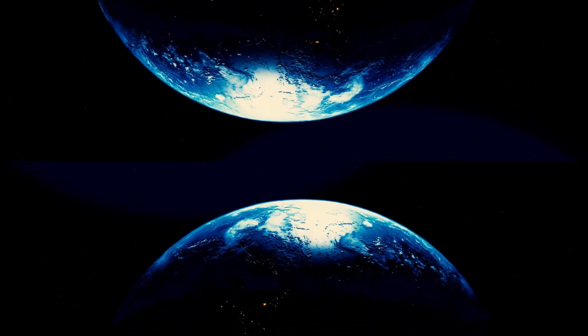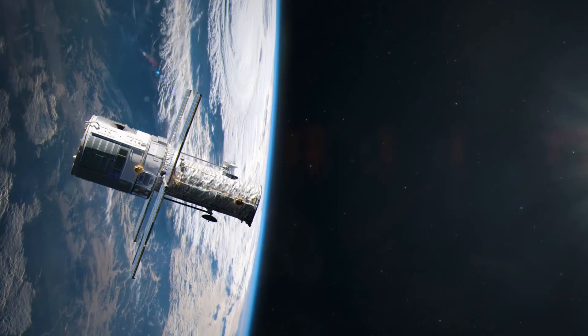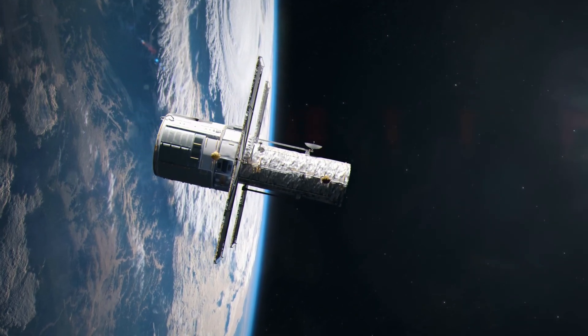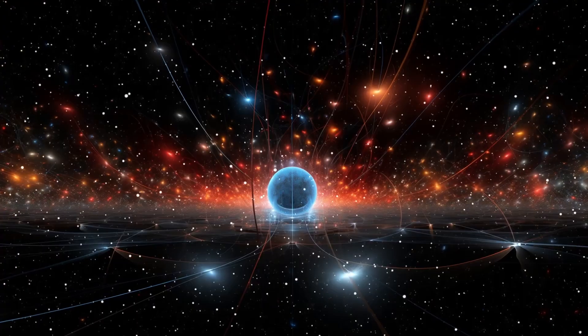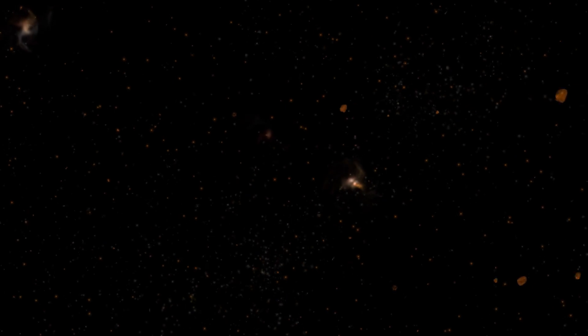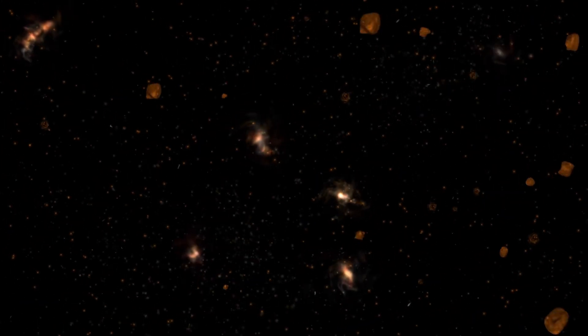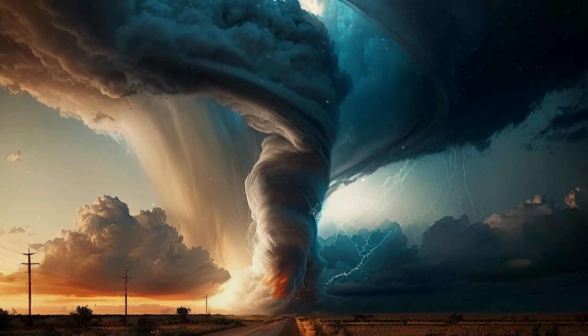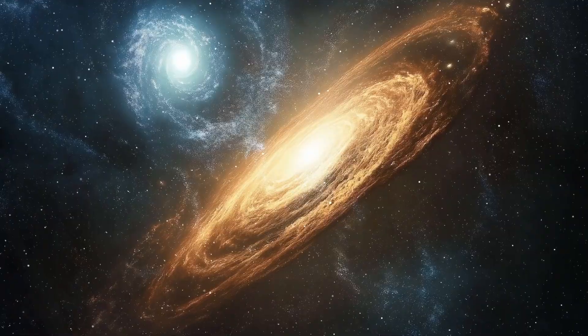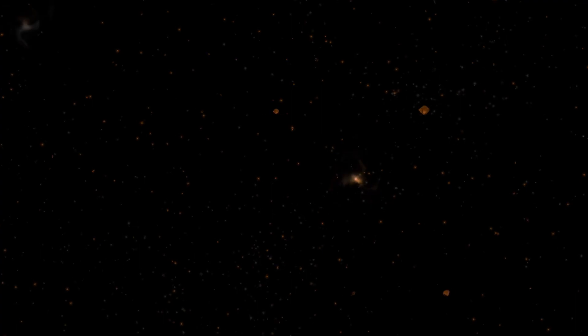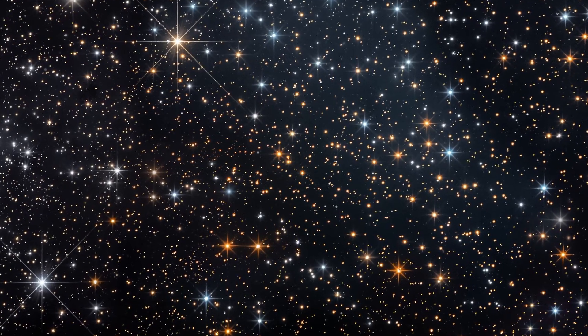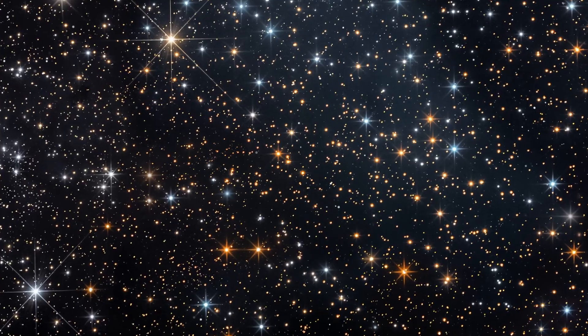What if the James Webb Space Telescope isn't just showing us early galaxies—it's showing us early rules? Physics may not have been constant. Gravity may have acted faster, particles may have moved differently, forces may have evolved. We assume the laws of nature are fixed, but what if they grew with the universe? What if early gravity was stronger? What if dark matter clumped faster? What if unknown particles influenced structure before we ever had atoms?